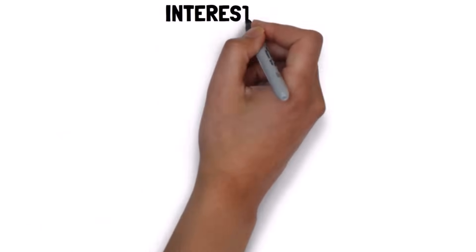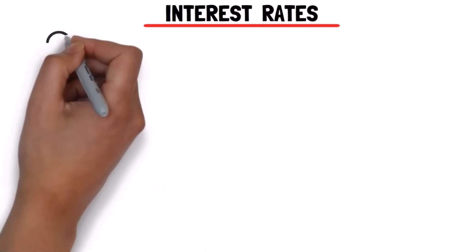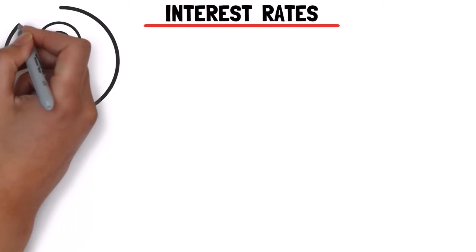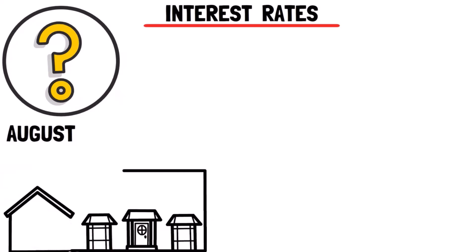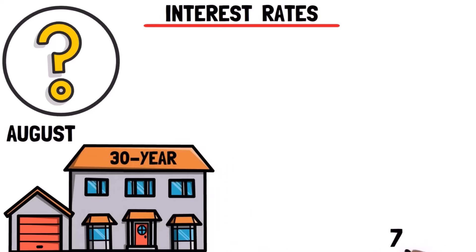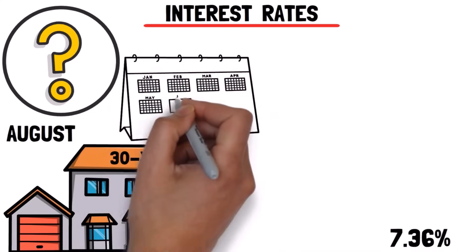Now, let's discuss the fourth issue, interest rates. This is the most uncertain part of what we're talking about. In late August, the average 30-year mortgage rate reached 7.36%, the highest in over 20 years.